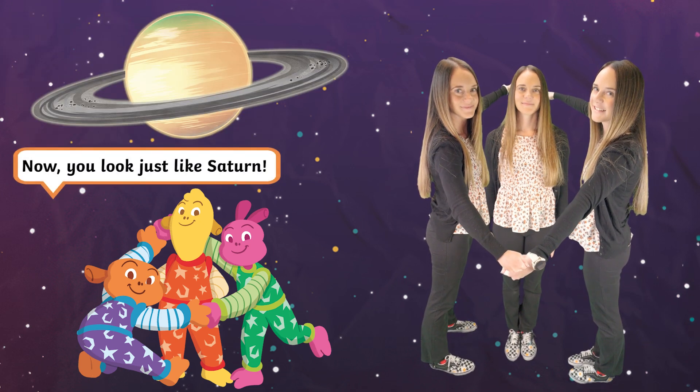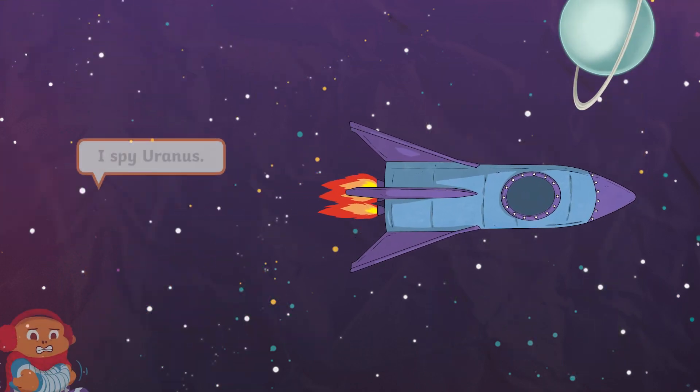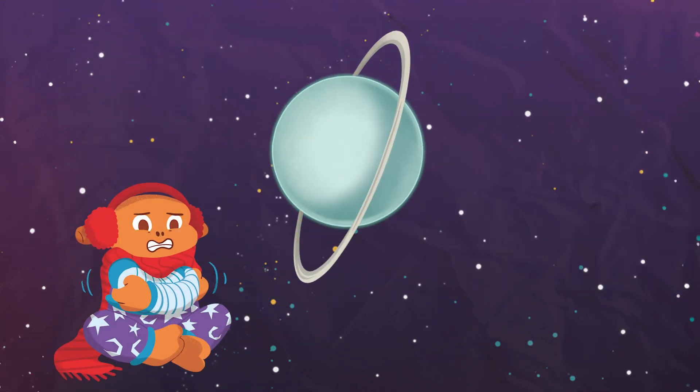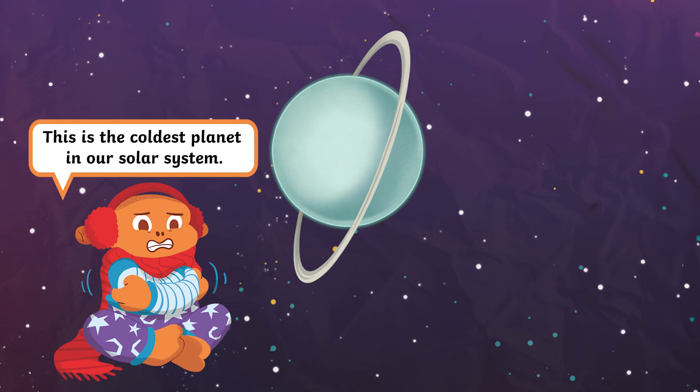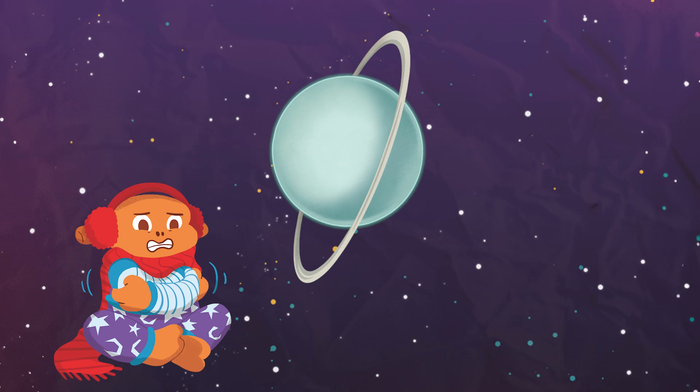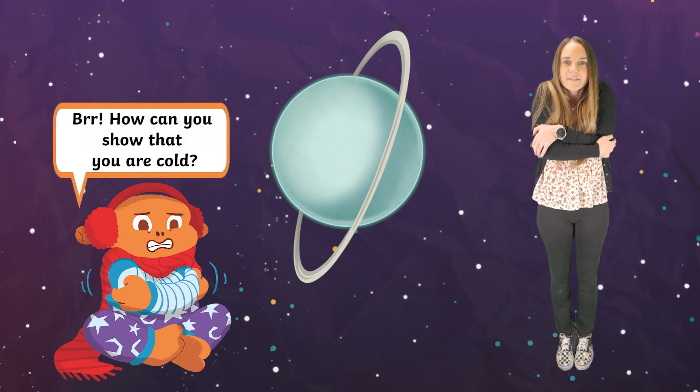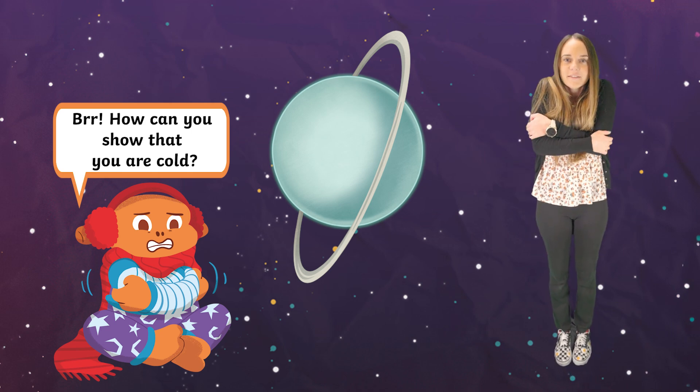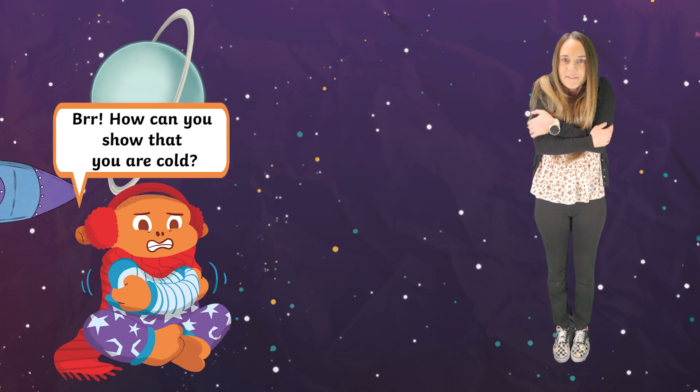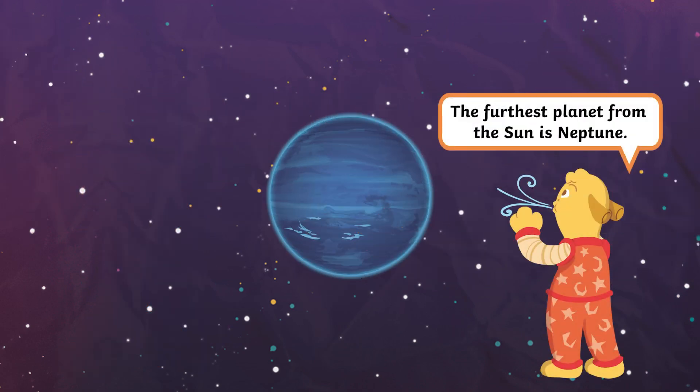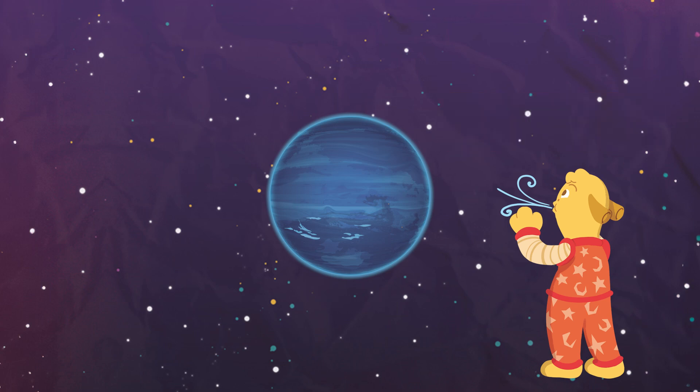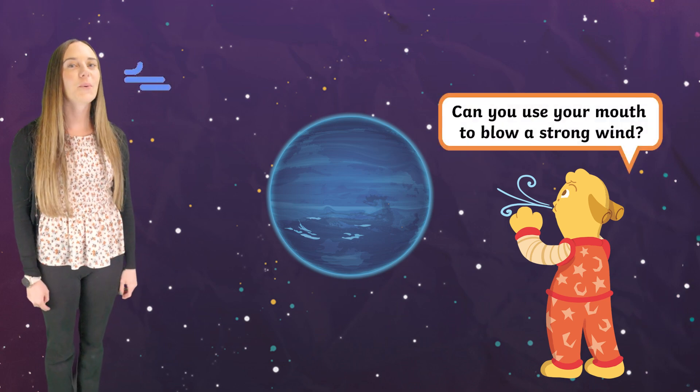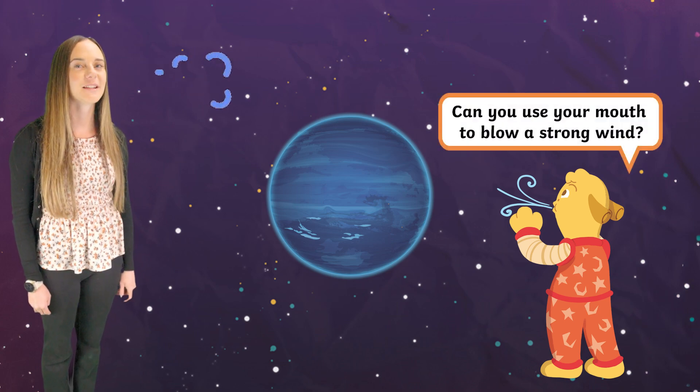I spy Uranus. This is the coldest planet in our solar system. The furthest planet from the Sun is Neptune. Neptune has the strongest winds in our solar system. Can you use your mouth to blow a strong wind?